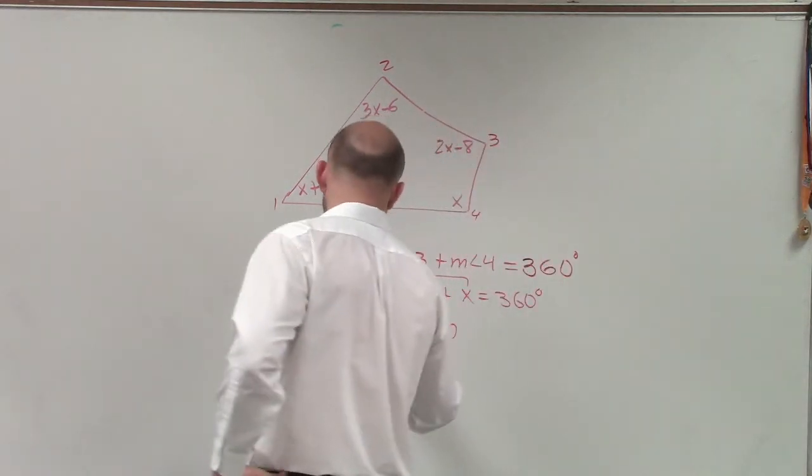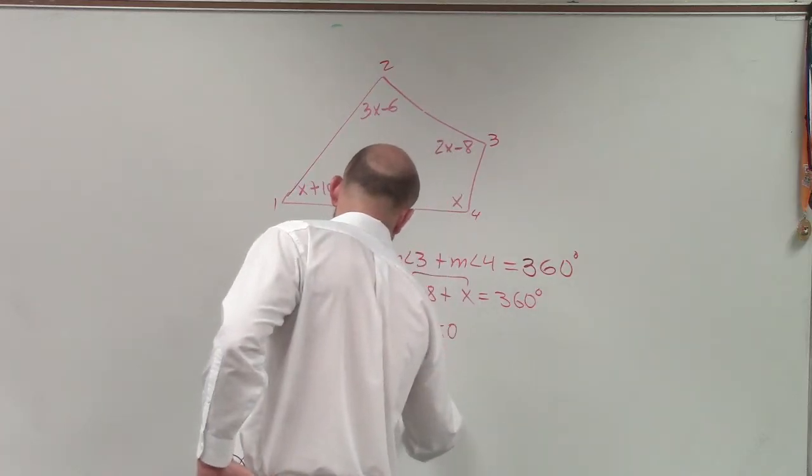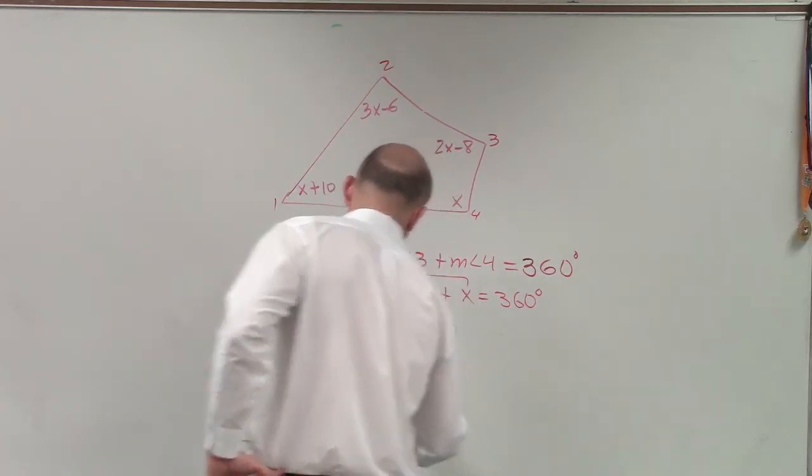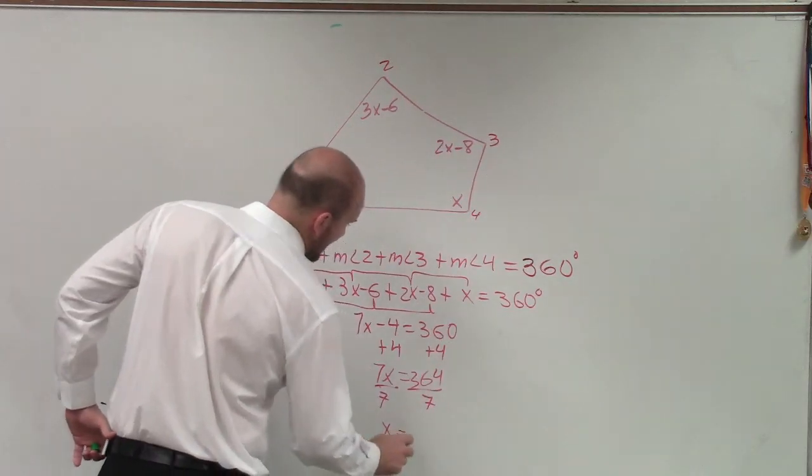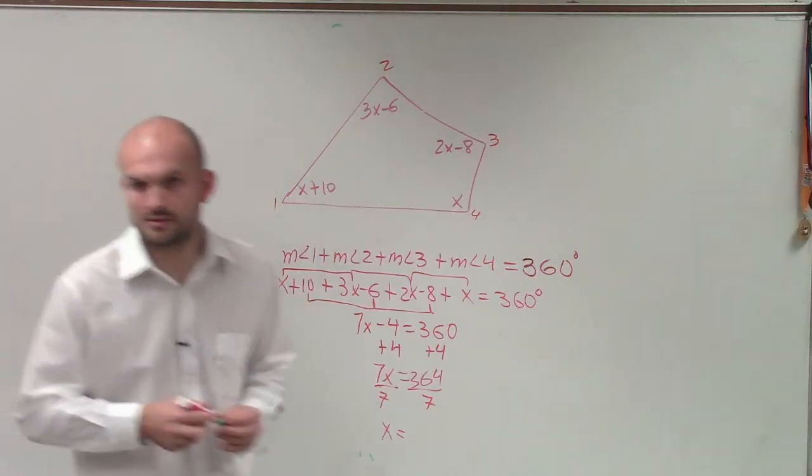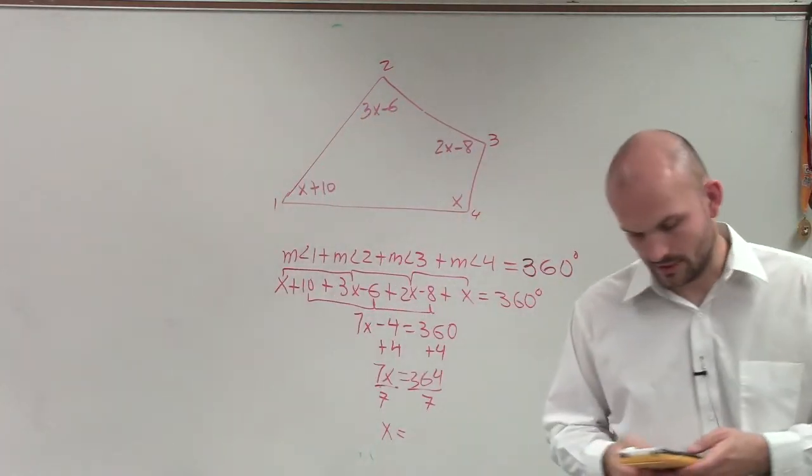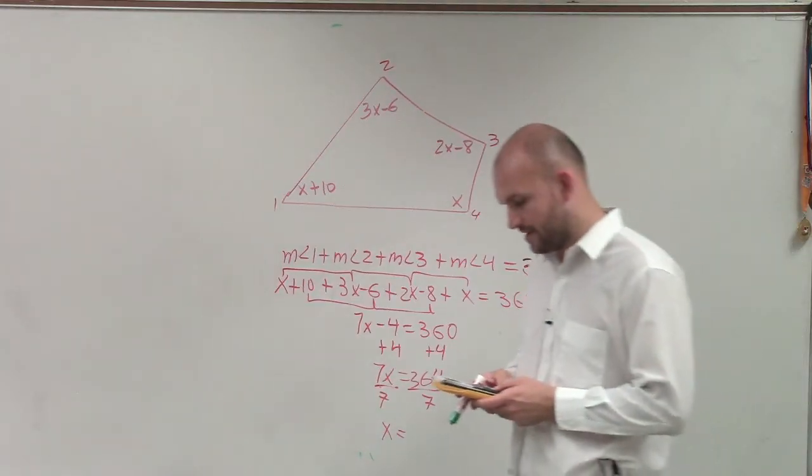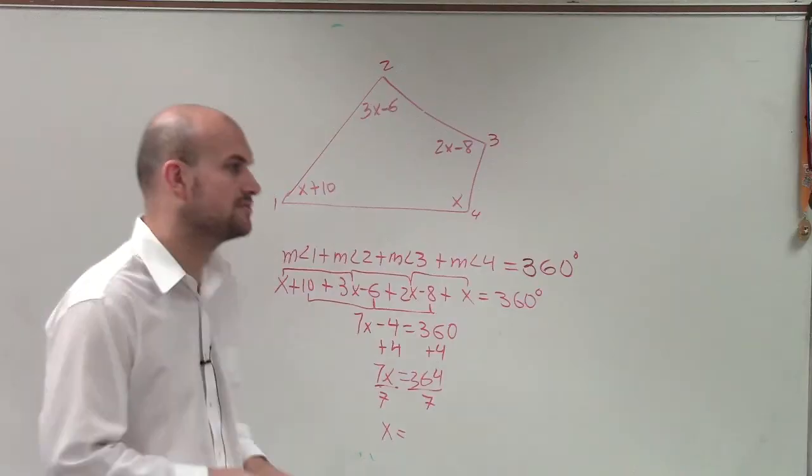Now, I solve the two-step equation. So I add 4 on both sides. So I have 7x equals 364, divide by 7, divide by 7, x equals? Anybody? Anybody get this answer? 364 divided by 7 equals 52. So x equals 52.